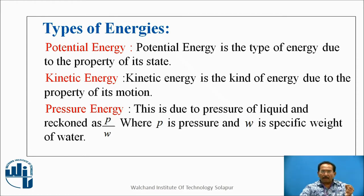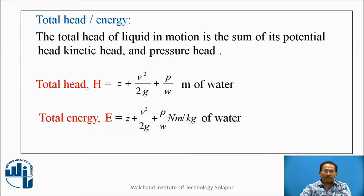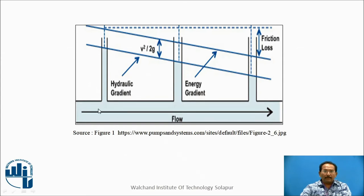When you keep pressure tubes — or Bernoulli's tubes — on a pipeline, you can find the rise of pressures. On the pipeline you can observe the water level is rising. Here, this is a pipeline, glass tubes are attached, and water level is rising due to pressure. Different diameters are there, and water level is rising. This is p by w — pressure upon specific weight.